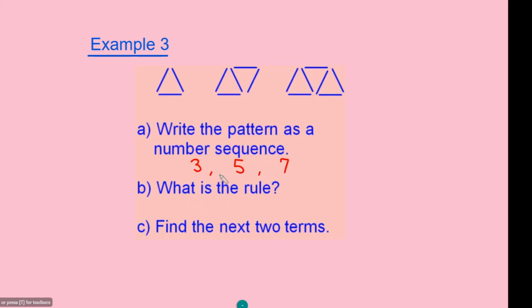Question B asks what is the rule. Looking at the sequence above, it follows a pattern of an addition of 2, so the rule is 'add 2'. Lastly, question C says find the next two terms. Since the sequence increases by a factor of 2 and we have 7, the next two terms are 9 and then 11. This is how you work out number sequences.